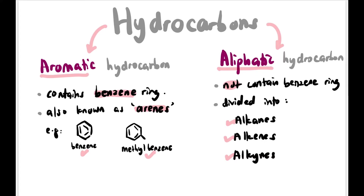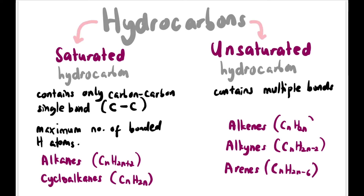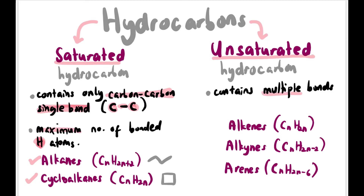Another way to classify hydrocarbons is saturated and unsaturated — 'tepu' and 'tidak tepu'. Saturated hydrocarbons contain only carbon-carbon single bonds, because they contain the maximum number of bonded hydrogen atoms. Examples include alkanes and cycloalkanes. Unsaturated hydrocarbons have multiple bonds — alkenes have double bonds, alkynes have triple bonds, and arenes have alternating double bonds like in benzene.